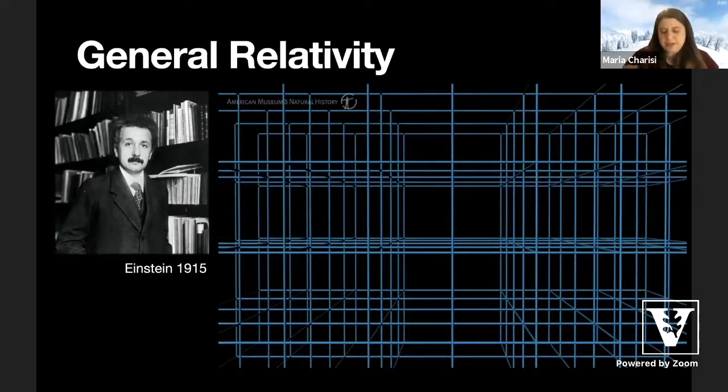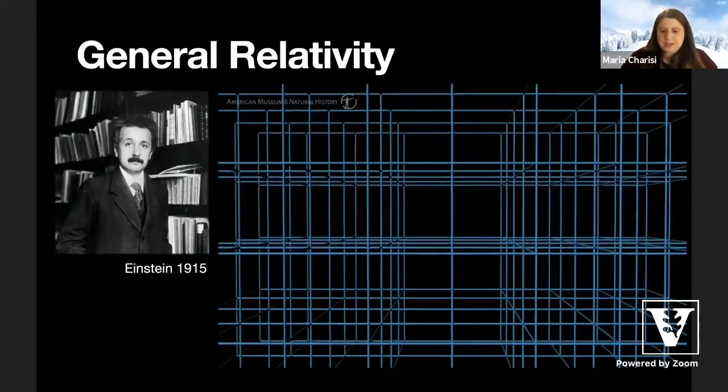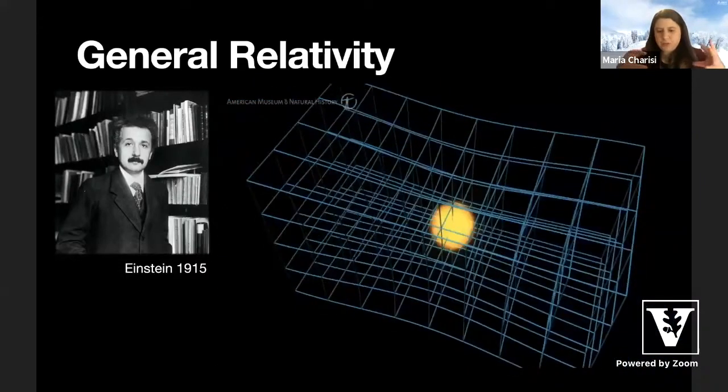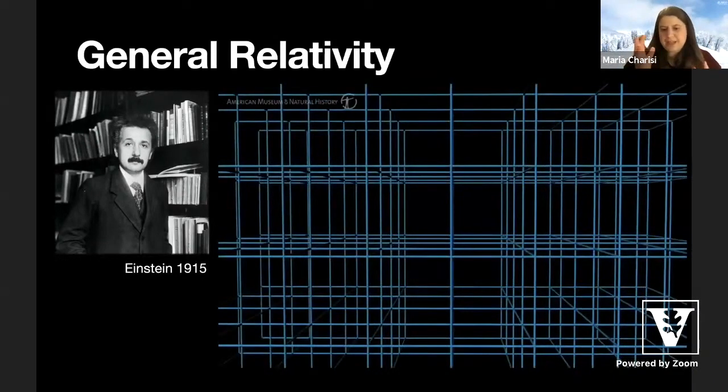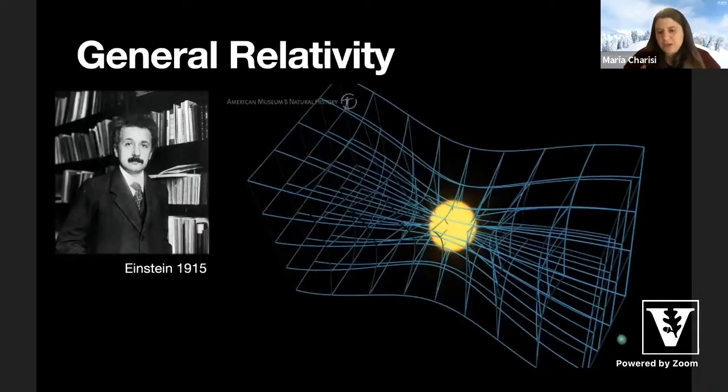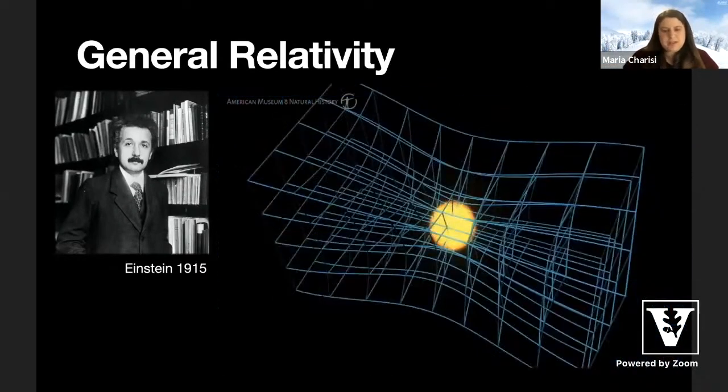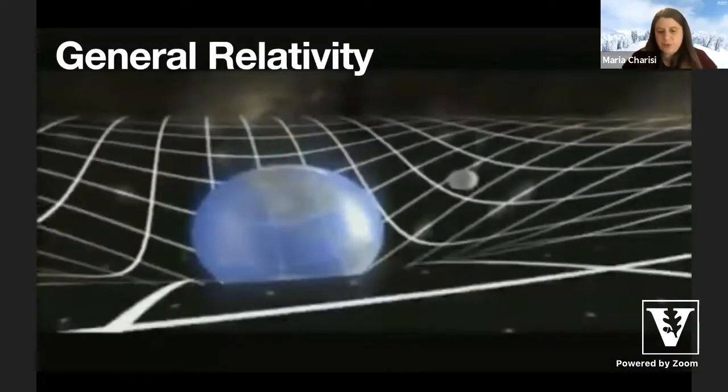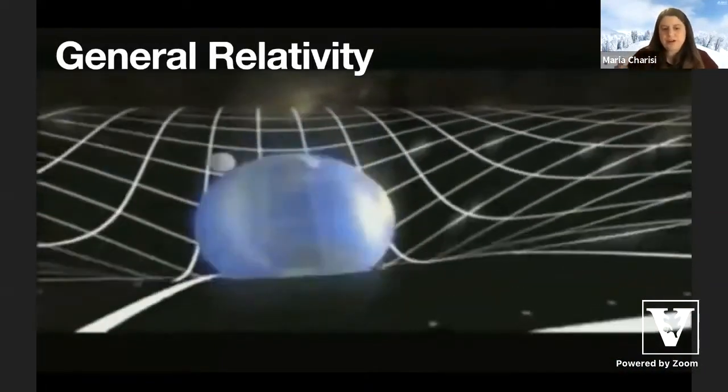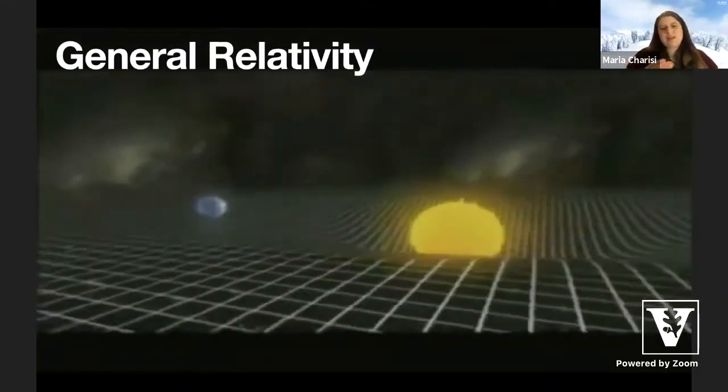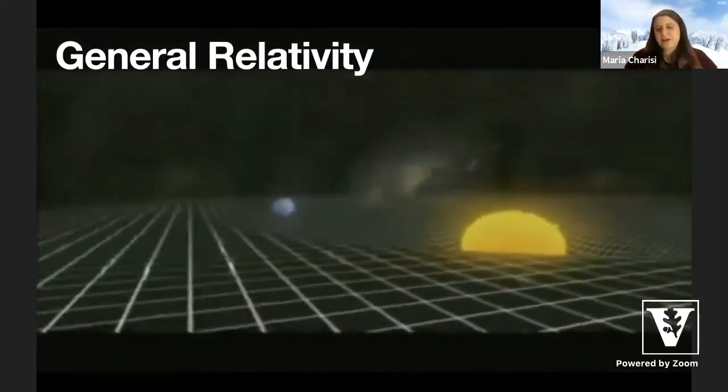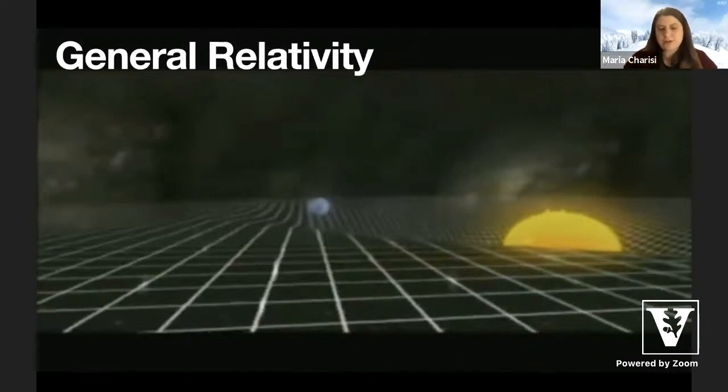So Einstein came along and came up with a new theory of gravity, which is called general relativity. And in that theory, the space and time are one thing called spacetime. Every object that has a mass curves the spacetime, and other objects move in that curvature. And that is what defines how the objects move in space. This can explain how the moon moves around the earth. The earth makes a dent into the spacetime and dictates how the moon orbits. And then the sun makes an even bigger dent in spacetime and defines how the earth revolves around it.